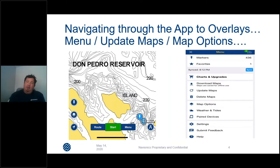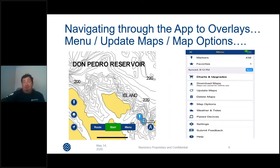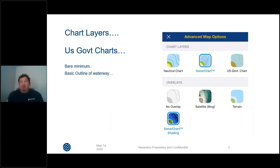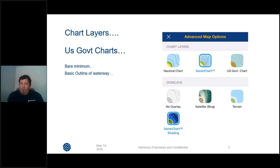There are also great things like weather and tides in the app, but to stay on track — on the right-hand side you've got Map Options with that same layer symbol. Click Map Options and it takes you into the advanced map options screen. Don't let the word 'advanced' throw you off — that's just the screen name. I'm going to run through the chart layers here.